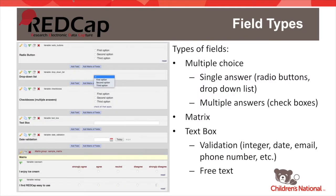Here are some common field types. First, radio buttons — this is your classic online exam-type question. You also have a drop-down list, which encodes the same information as radio buttons just in a slightly different format. Checkboxes are similar to radio buttons but allow multiple answers to be selected. Probably the most commonly used is a text box, which accepts raw text. You can set a text box to have a variety of validations — for example, a text box with a date validation will show a calendar icon that is clickable to select a date, with a today button shortcut as well.